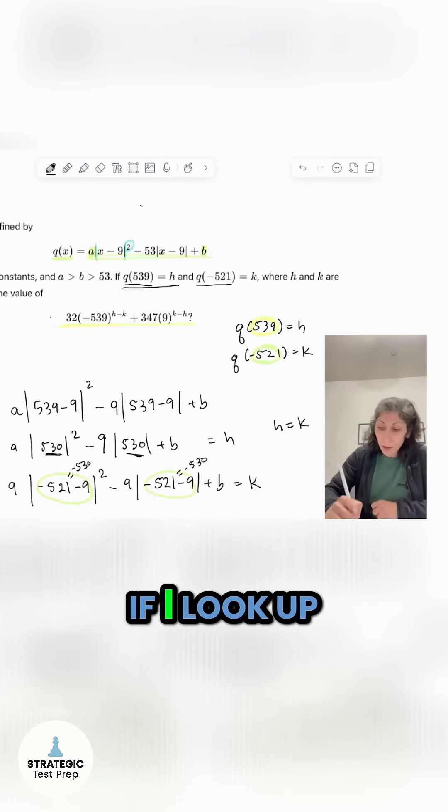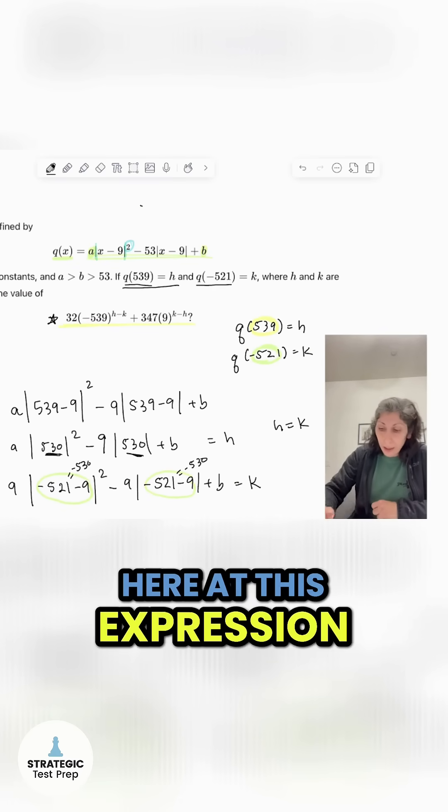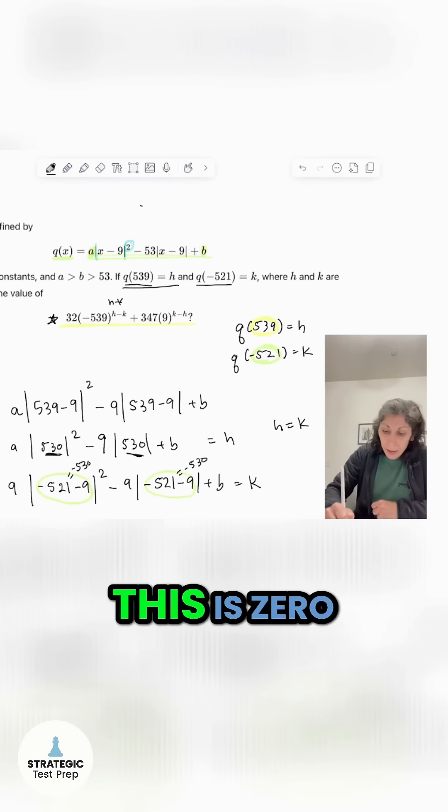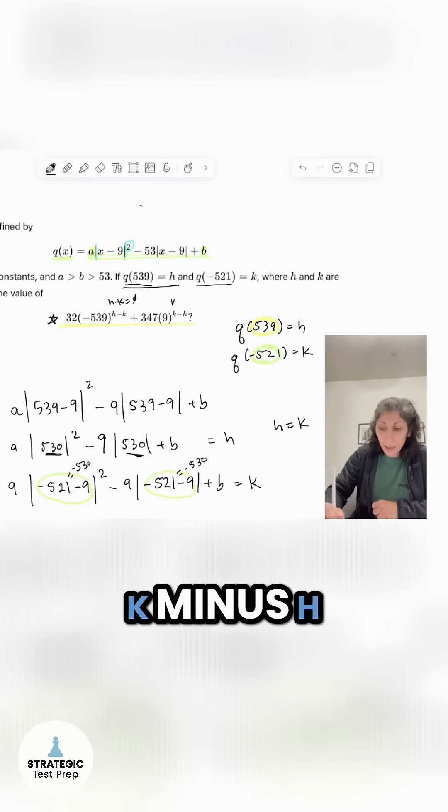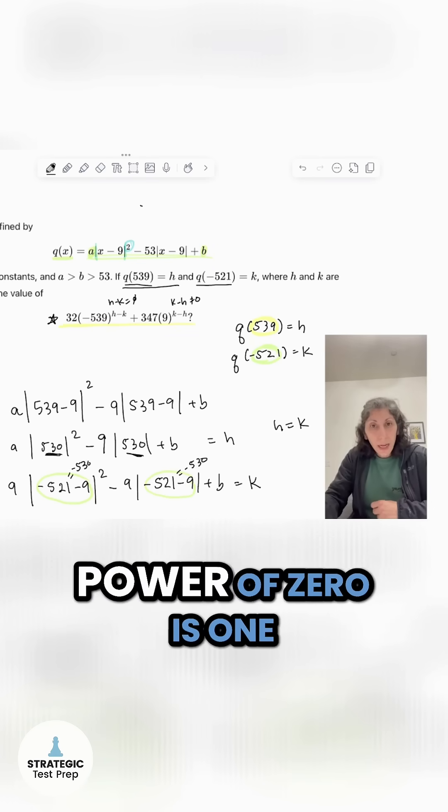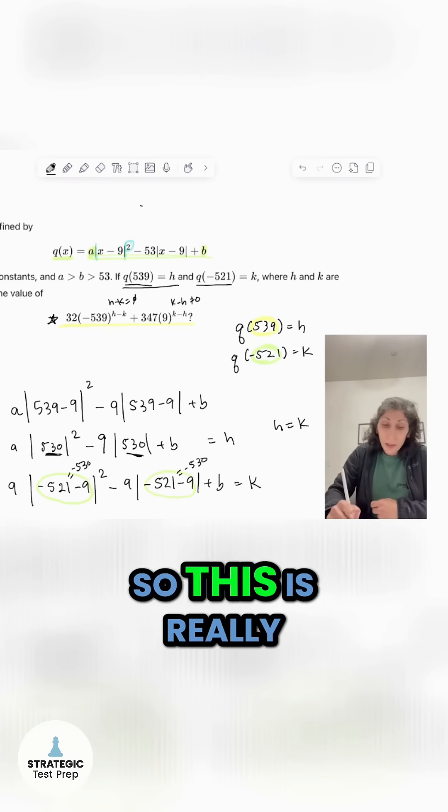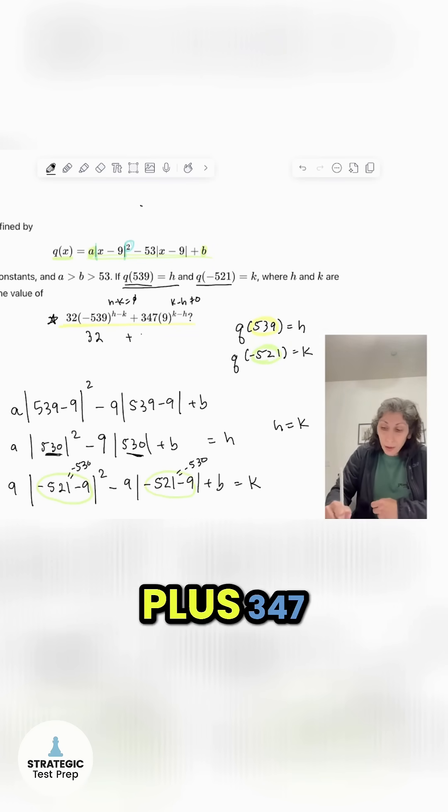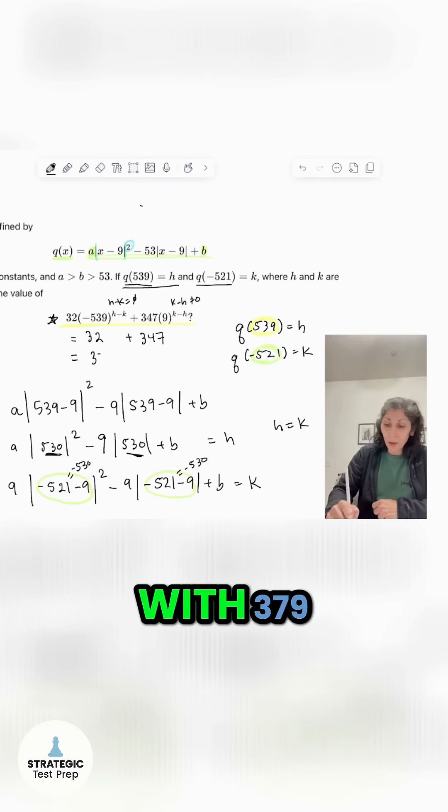So that means that if I look up here at this expression, that means if I did H minus K, this is zero. And if I did K minus H, that one's zero. So technically, any number to the power of zero is one. So this is really 32 plus 347 and end up with 379.